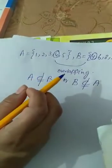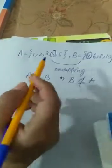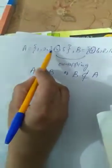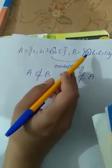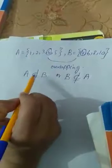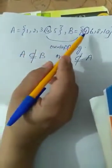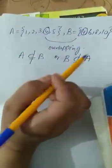Now let's see, we know that all the elements are not present in set B. That's why A is not a subset of B and also B is not a subset of A. This is called overlapping set.